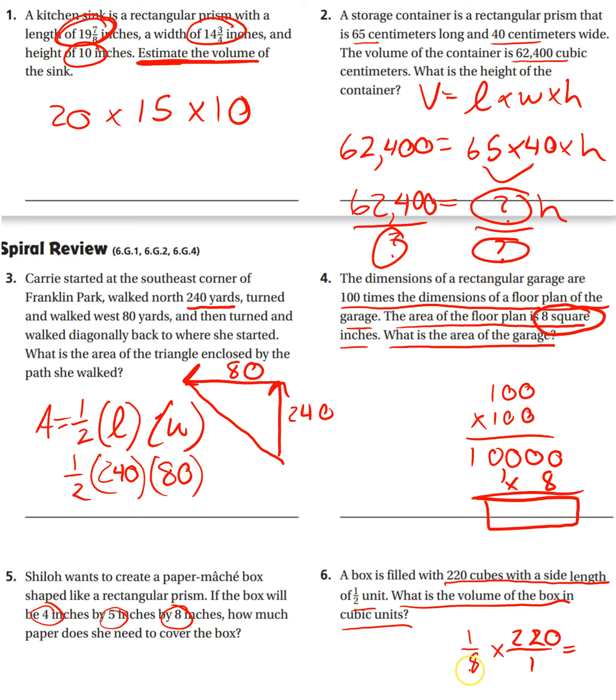Then I can cross-simplify here. Two goes into eight four times. Two goes into 210, 110. Oh, I can simplify even further. Two goes into four two times. Two goes into 110, wow, 55 times. So that's going to be 55 over two. And then if we divide that out, two goes into 55, 27 times with one remainder. So 27 and a half and it's units cubed.